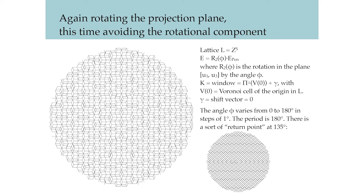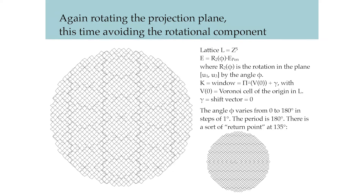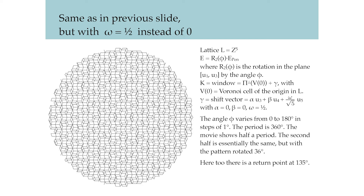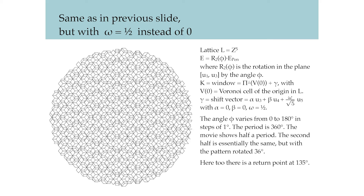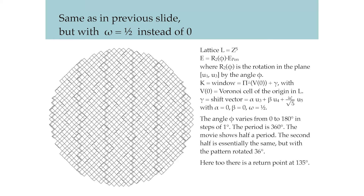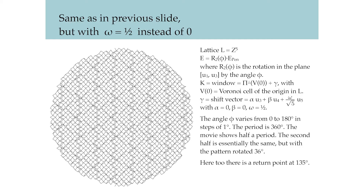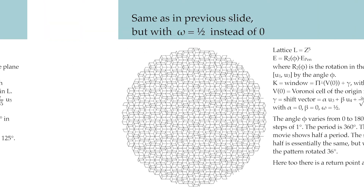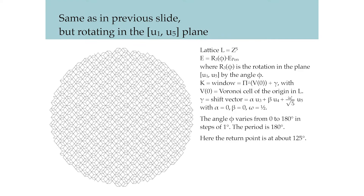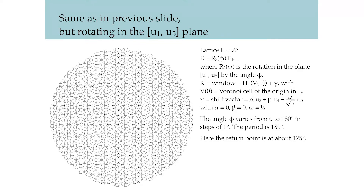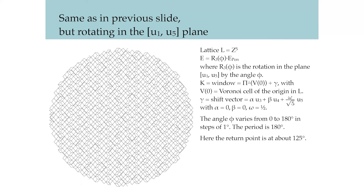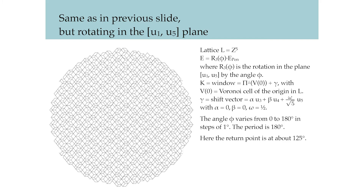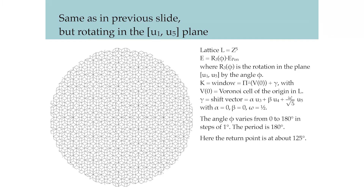In this animation, we again rotate the projection plane but avoid the rotation within the projection plane. The angle phi varies from zero to 180 degrees in steps of one degree, and the period is 360 degrees — the animation shows half a period. The second half is essentially the same but with the pattern rotated 36 degrees. Here too, there is a return point at 135 degrees. This animation is the same as the previous, but the rotation is in the U1, U5 plane instead of the U1, U3 plane. The angle phi varies from zero to 180 degrees in steps of one degree, and the period is 180 degrees. Here, the return point is at about 125 degrees.